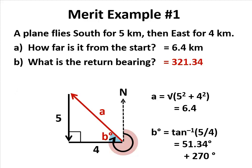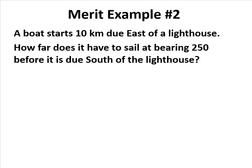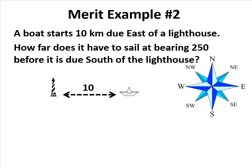Let's do another one. The boat starts 10 kilometers due east of a lighthouse, so we again do a sketch. We have a lighthouse and a boat dead east 10 kilometers. It then sails at a bearing of 250. Well, 250 is towards southwest because 180 will get us to south and it's a bit more, so the boat's going to sail this way until it reaches a point directly south of the lighthouse.